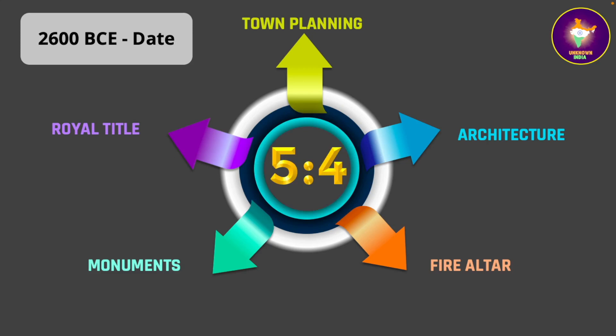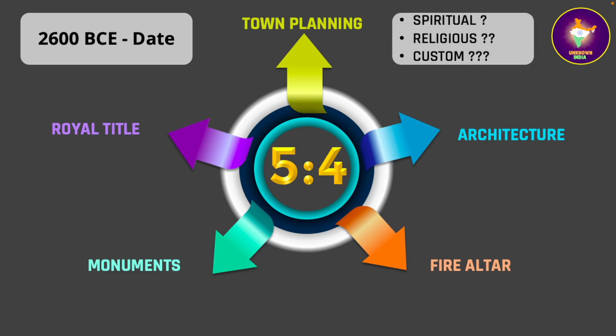Thus we see that for over 4,600 years — from 2600 BCE till the present day — the ratio of 5 to 4 has occupied a very prominent position in Indian civilization, in various activities such as civil, cultural, religious, architectural, and royal traditions. It is remarkable that even today the Mahavedi or great fire altar is constructed with dimensions in the same ratio. What is special about this ratio? Is it spiritual, religious, or just a custom? We just don't know. Perhaps after viewing this video, some viewers may be motivated to inquire deeply and find the answer.